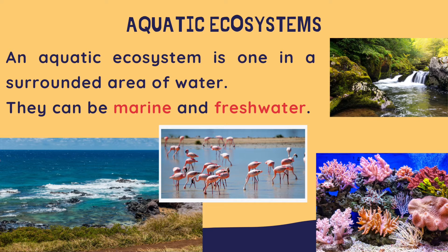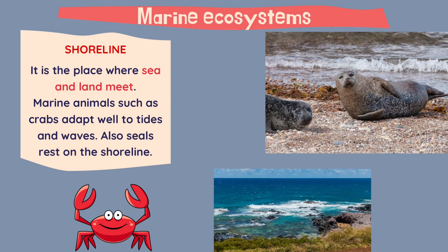An aquatic ecosystem is an ecosystem in a surrounded area of water. They can be marine and freshwater, like this one. On the marine ecosystems we can differentiate the shoreline, the coral reef and the open ocean.